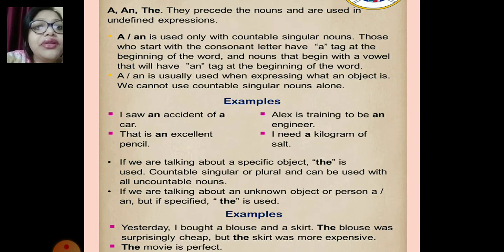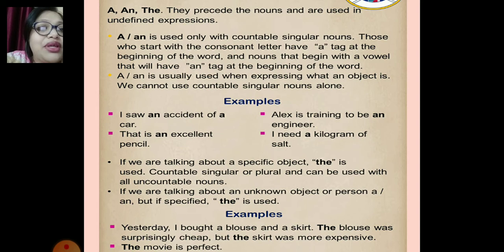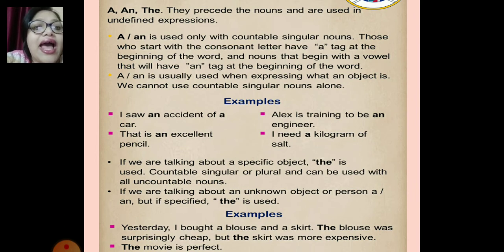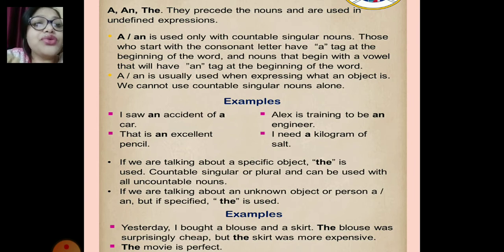Moving to some more rules. If we are talking about specific objects, then we use the word 'the' before it. Countable singular or plural can be used with all uncountable nouns. If we are talking about unknown objects or a person, we use 'a' or 'an', but if specified, we use 'the' — for example, the Himalayas, the Kanchanjunga peak.